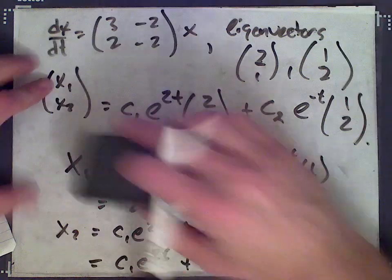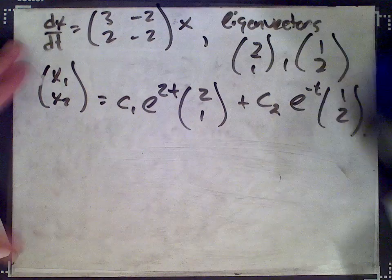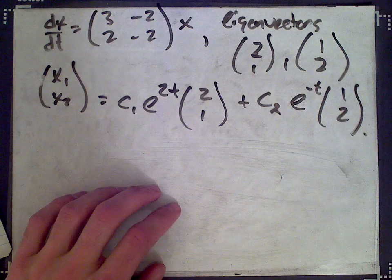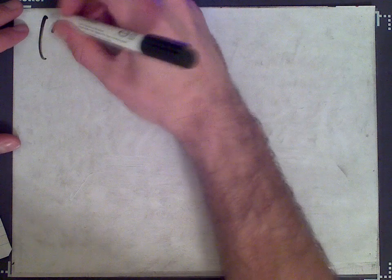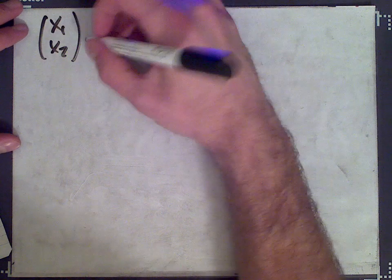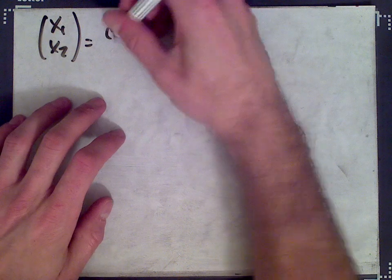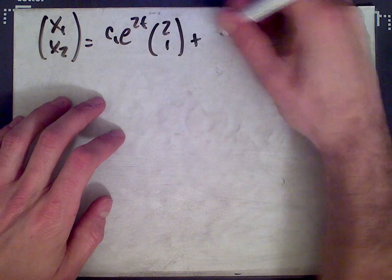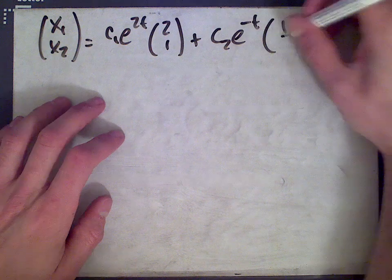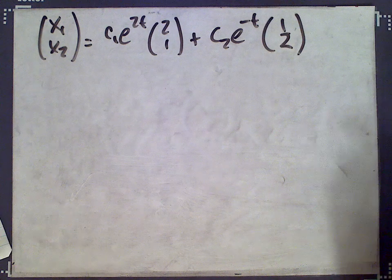Going back to our solution: x = c₁e^(2t)[2, 1] + c₂e^(-t)[1, 2]. Let's now draw the phase plane diagram.